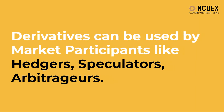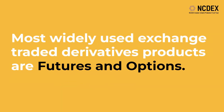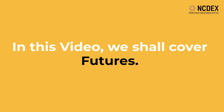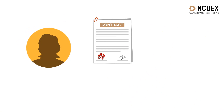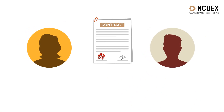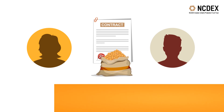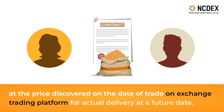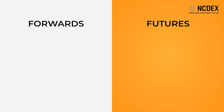Based on the set of assets, derivatives can be used by market participants like hedgers, speculators, and arbitrators. The most widely used exchange-traded derivatives products are futures and options. In this video we shall cover futures. A future contract in commodities, being exchange-traded, is an agreement between two or more parties to buy or sell an underlying commodity — for example, chana — at the price discovered on the date of trade on the exchange trading platform, for actual delivery at a future date.